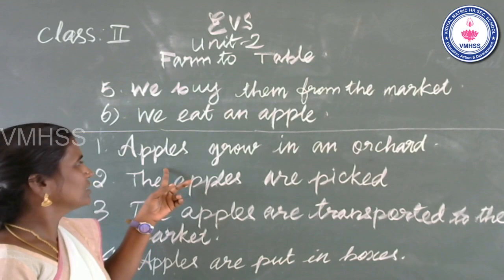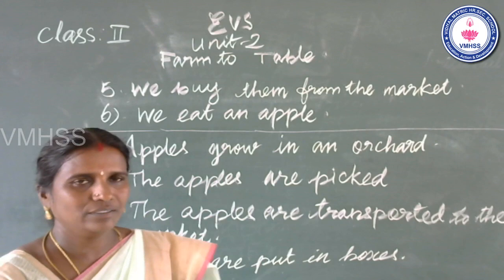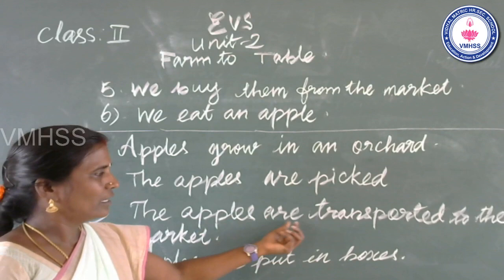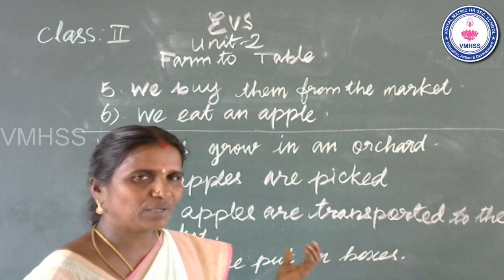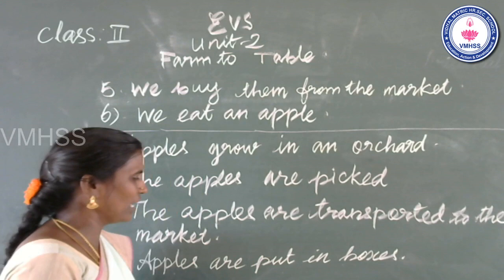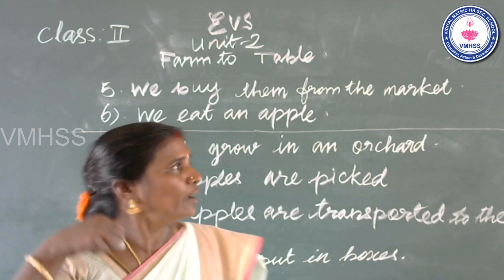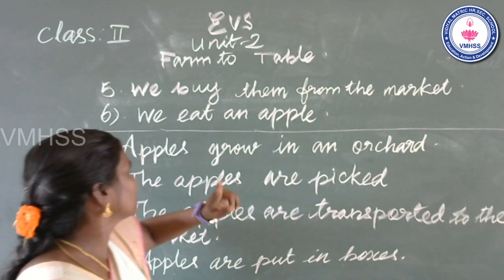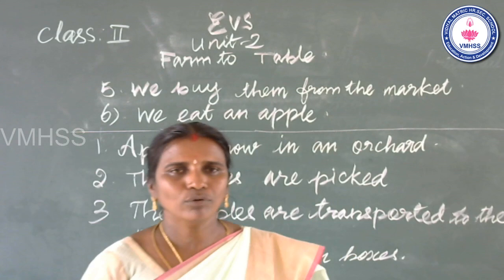Look here. Apples grow in an orchard. The apples are picked, then transported to the market. The apples are transported to various places. Apples are put in boxes for sale. We buy from the market. Lastly, we eat an apple.